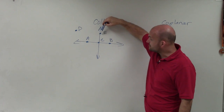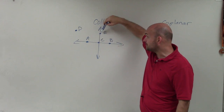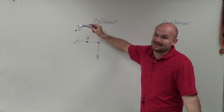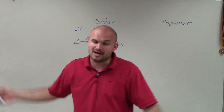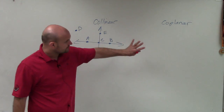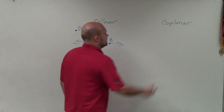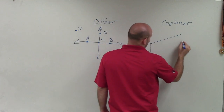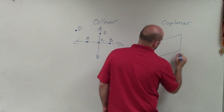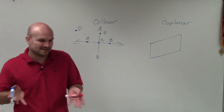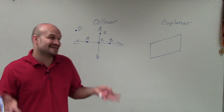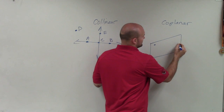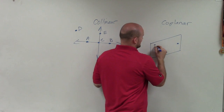Point E lies on the same line with E and C, so we could say those are collinear, but it is not collinear with A, C, and B. The same thing applies to D, because that's not on any line — so obviously it's not on the same line. Collinear is just going to be any points that lie on the same line.